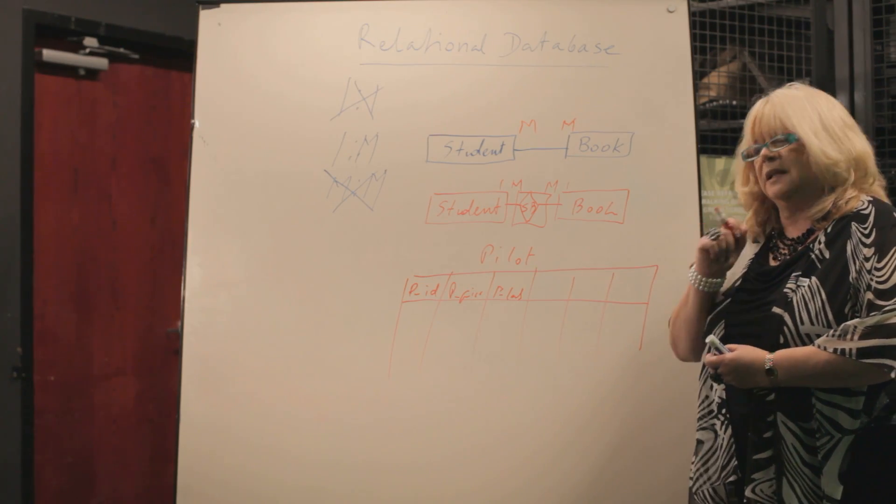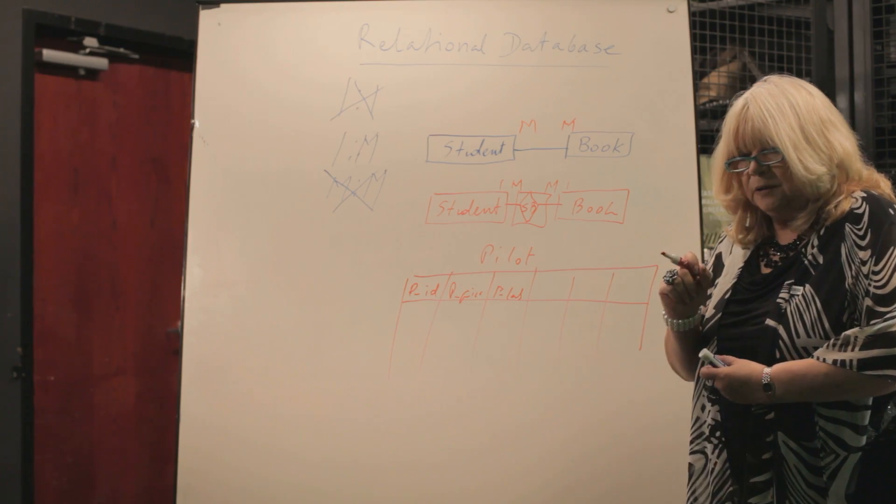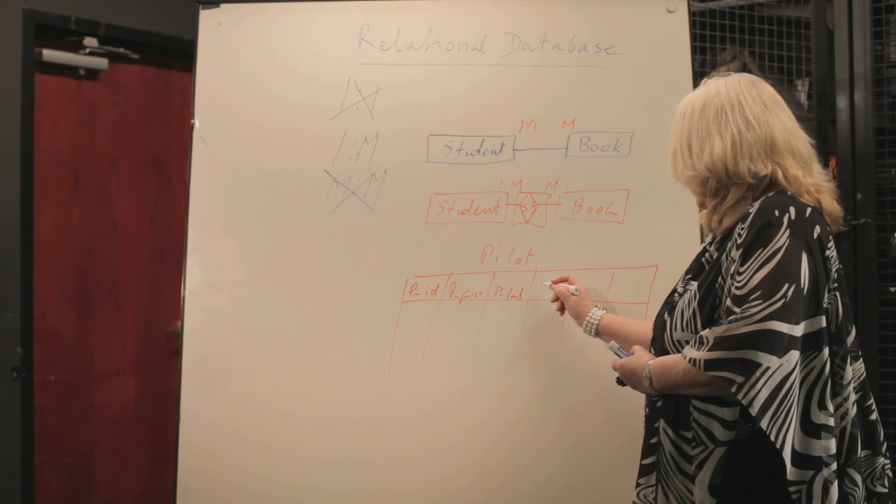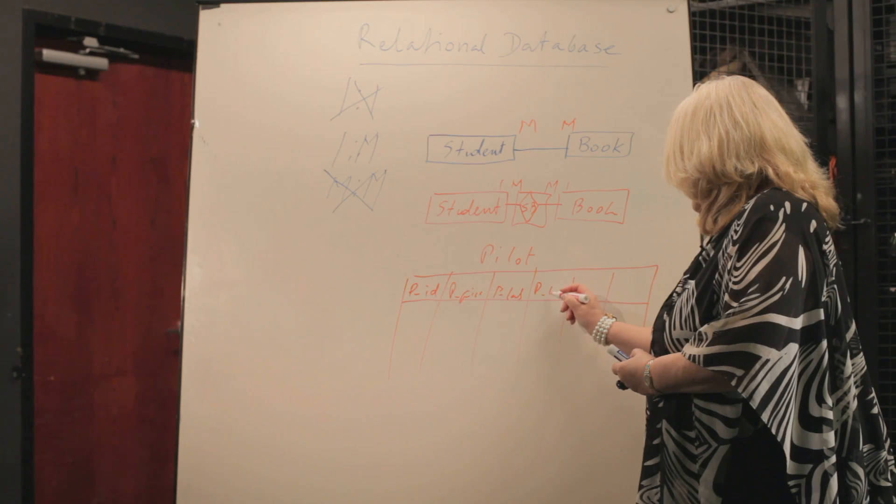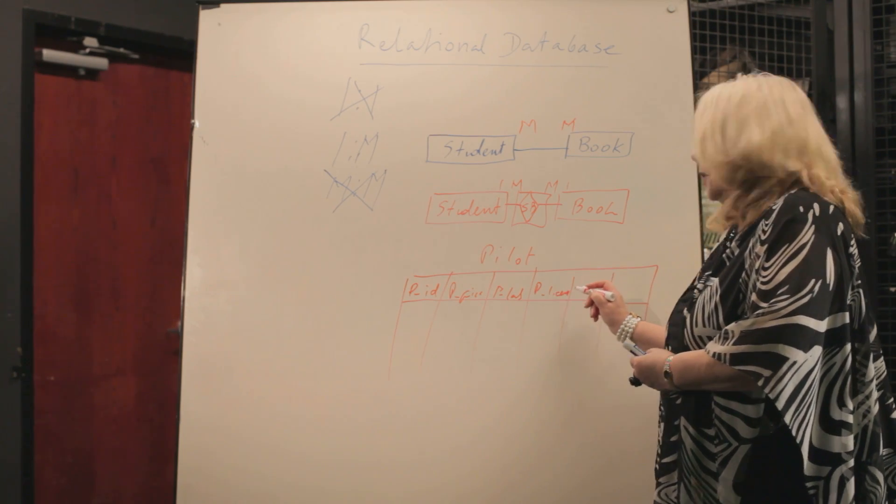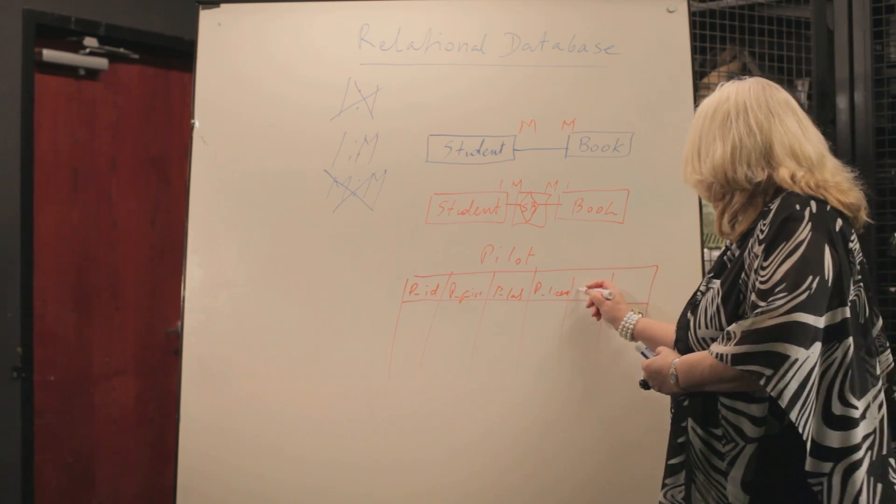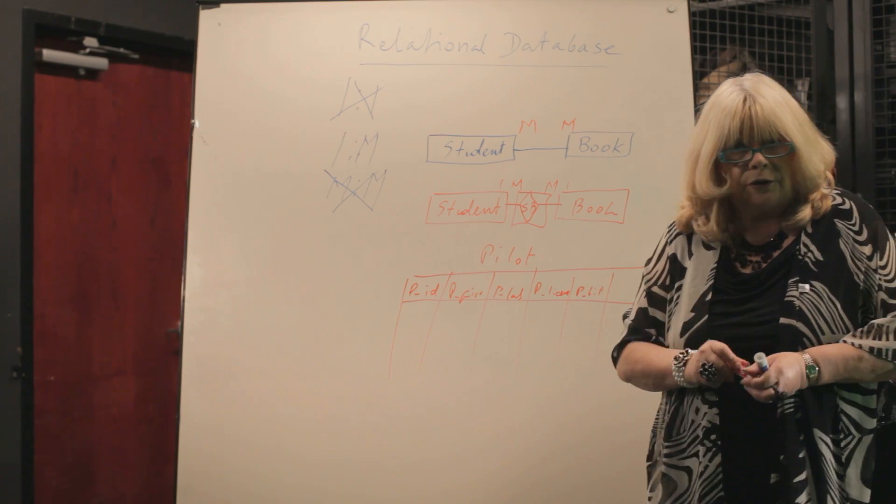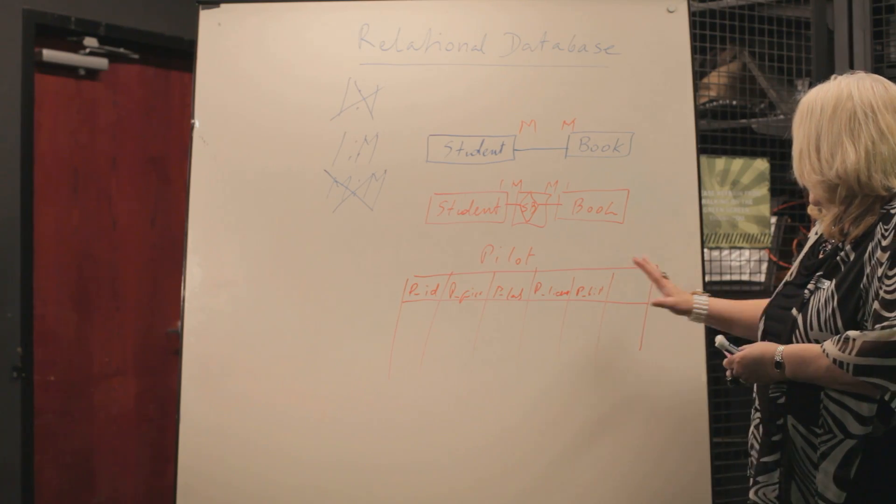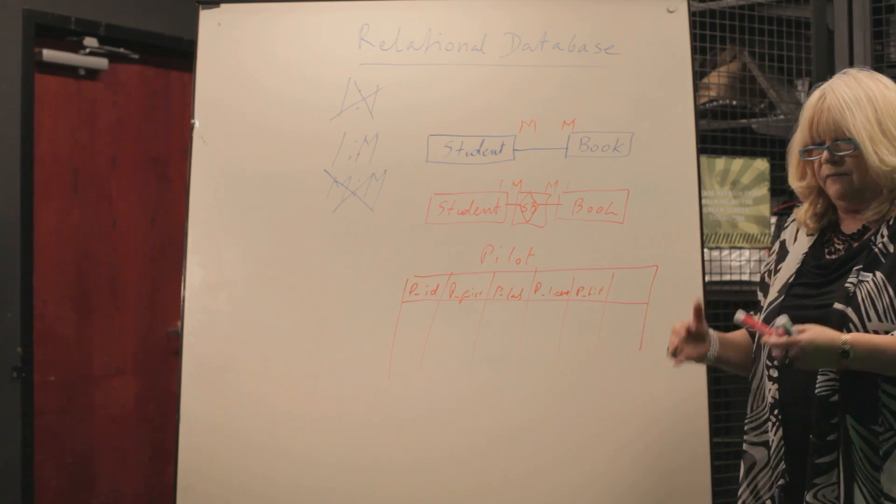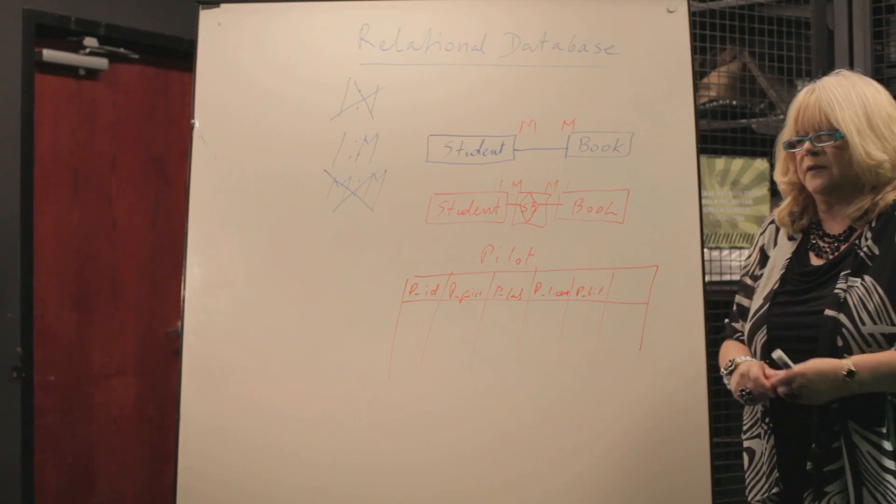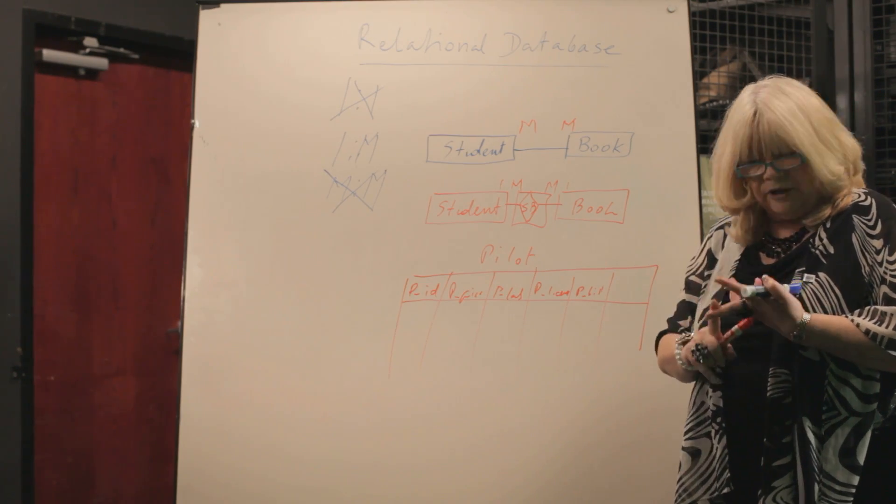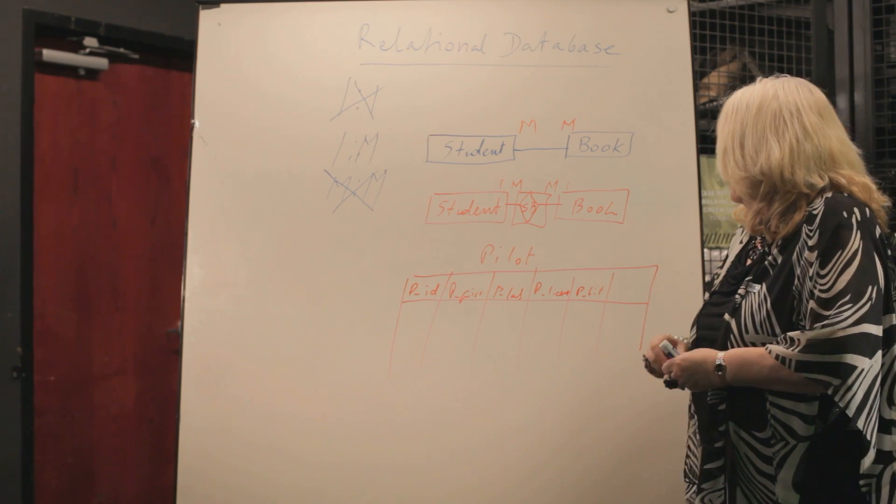However, for pilots we have something else that we need to store. For a pilot to be active, to be allowed to fly, they need to have certificates, correct? Pilot license. And then they also need to have pilot bill of health. Every six months they have to go to a doctor, they have to be checked out. Now, remember in our company we don't only have pilots, we have stewardesses, we have technical crews, we have administration people, and so on.